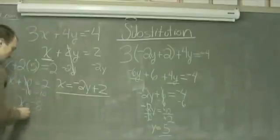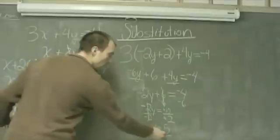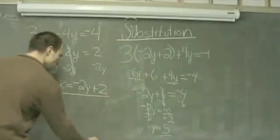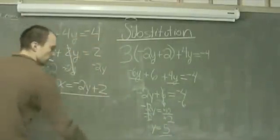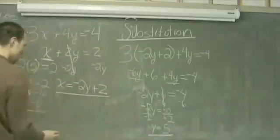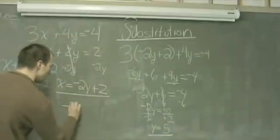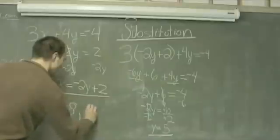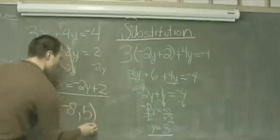I now know that x equals negative 8 and y equals 5. So our solution to this system of equations is the coordinate negative 8 from our x and 5 from our y value.